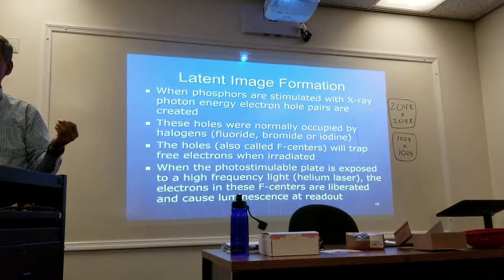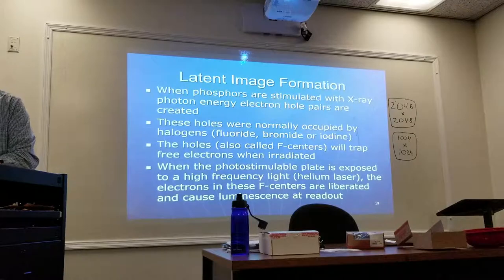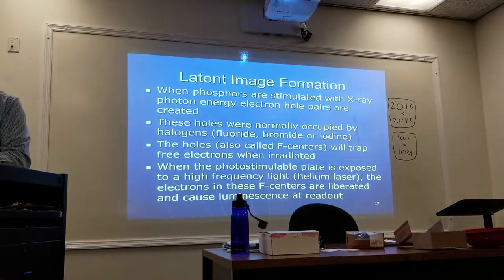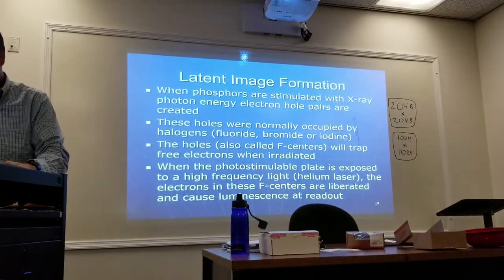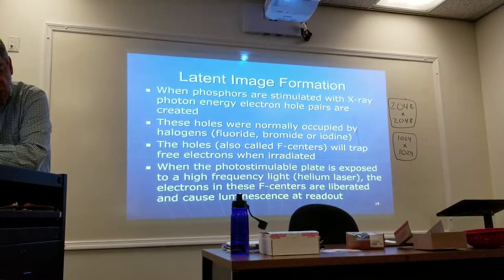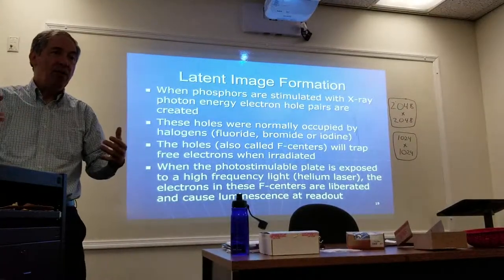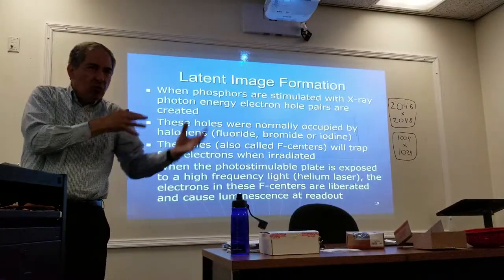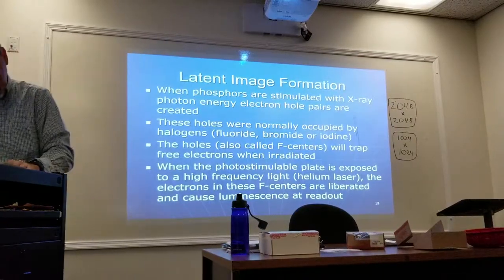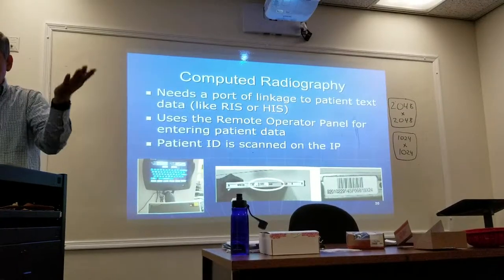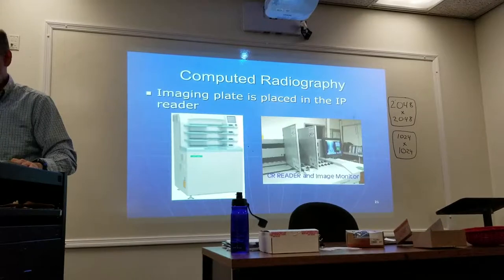When the phosphors are stimulated with an x-ray photon, electron holes are created — also called F-centers — and they trap the free electrons when irradiated. Then when the plate is exposed to laser light, the electrons are liberated and give off light, which is the signal. The photostimulable phosphors, when trapped, are in a higher energy metastable state — they can't hold that energy, so they want to be released, and that's what the laser light does.